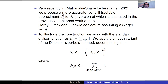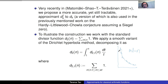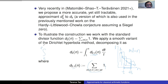The key idea for d_2: the divisor function counts lattice points on the hyperbola mn=n. Split it into dyadic pieces: for each scale T, let d_{2,T}(n) count divisors m in [T, eT]. Averaging over T recovers d_2, since ∫ dT/T = 1. This decomposes the divisor function into dyadic chunks.